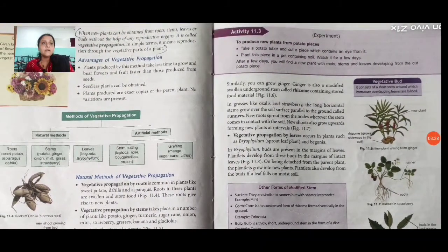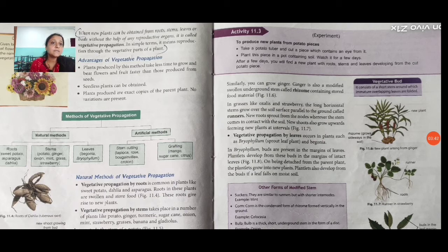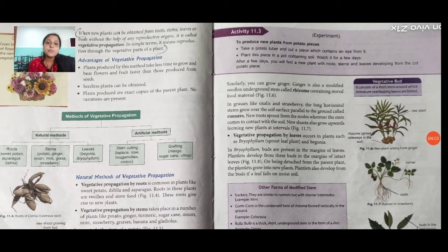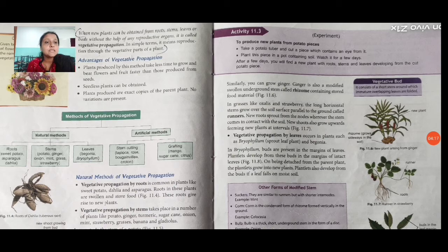Activity 11.3 is to produce new plants from potato pieces. Take a potato tuber and cut a piece which contains an eye from it. Plant this piece in a pot containing soil and watch it for a few days. After a few days you will find a new plant with roots, stems, and leaves developing from the cut potato piece. This activity proves that this is called vegetative propagation. Similarly, ginger is also a modified swollen underground stem containing stored food material — as seen in Figure 11.6.